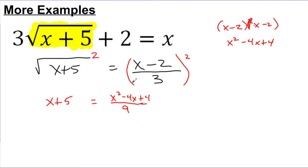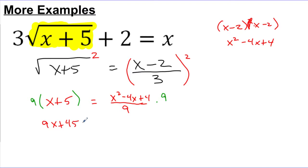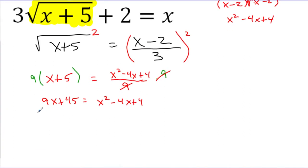Now I'm looking at this and saying, how do I solve this thing? Our goal is to get all the x's on the same side. Whenever I have a quadratic or a squared term showing up, I want everything moved to one side. I don't want there to be a fraction, so I'll start by getting rid of the dividing by 9 — multiplying both sides by 9. The left-hand side becomes 9x plus 45, and the 9s cancel on the right, leaving just x squared minus 4x plus 4.